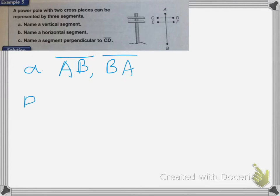On B, name a horizontal segment, we have two here to choose from. We could either do CD, which is a segment, or you could do EF.